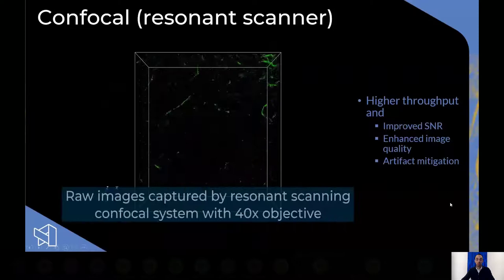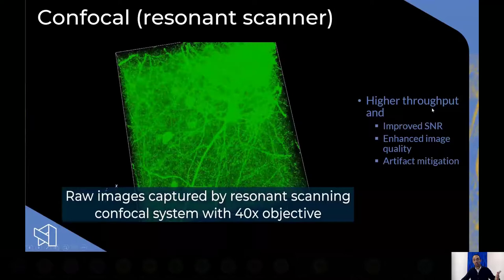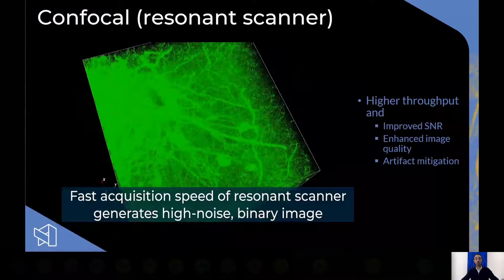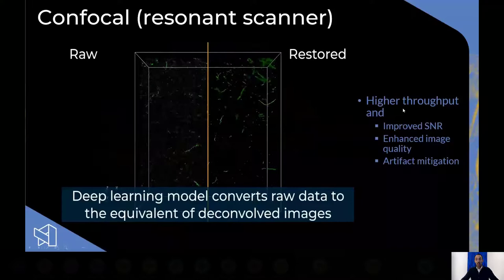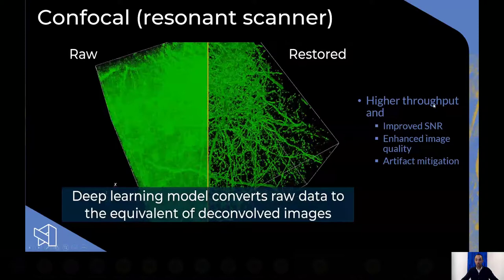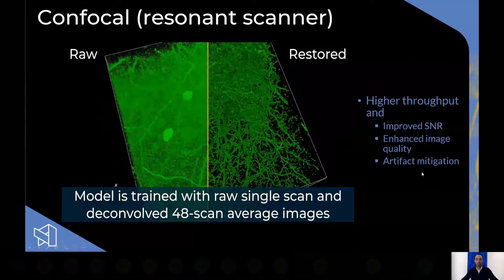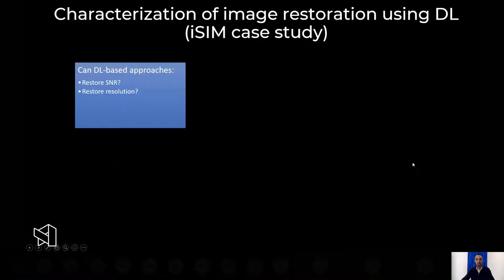For this first group of experiments, we've shown that we can increase throughput — imaging with a resonance scanner at a single scan is much faster than doing 64 scans, averaging, then deconvolving. We can now do this systematically, which means we can improve signal-to-noise, improve throughput, and enhance image quality while mitigating artifacts.